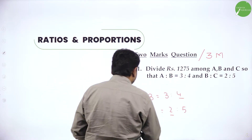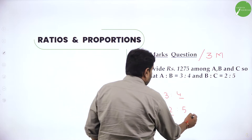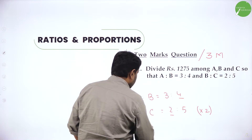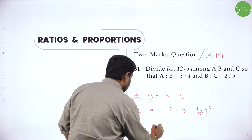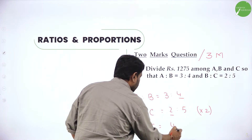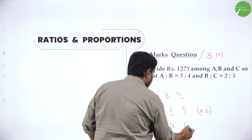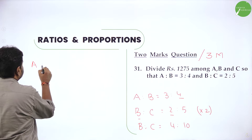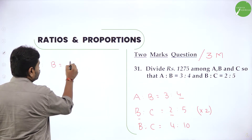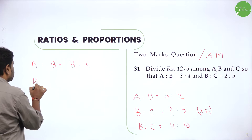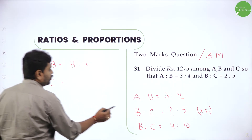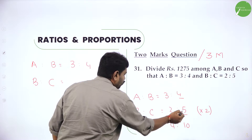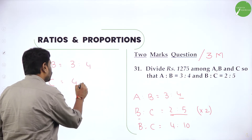So to make them same, multiply the B is to C ratio with 2. Multiply this with 2. Then the new value of B is to C becomes: 2 multiplied by 2 is 4, and 5 multiplied by 2 is 10. So after you multiply, you got new value of B. A is to B is 3 is to 4. And B is to C, after multiplying by 2, becomes 4 is to 10.